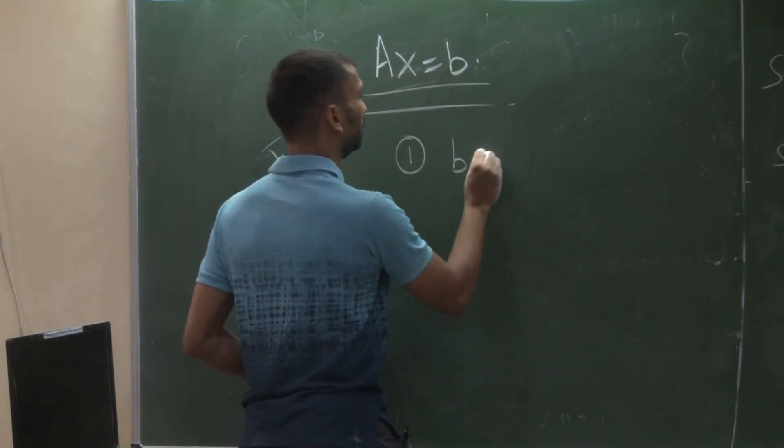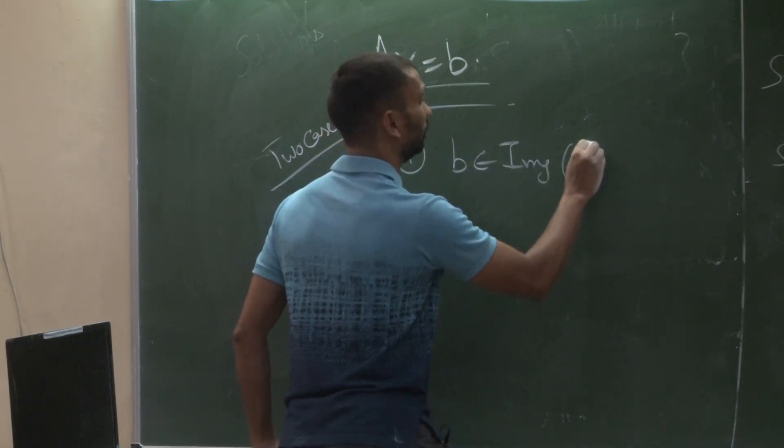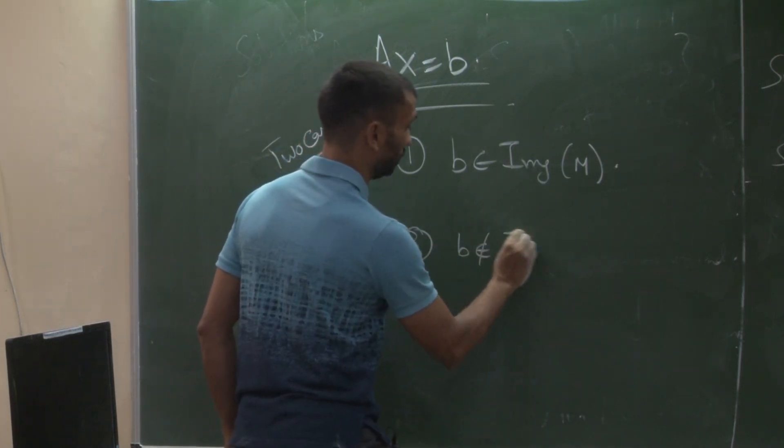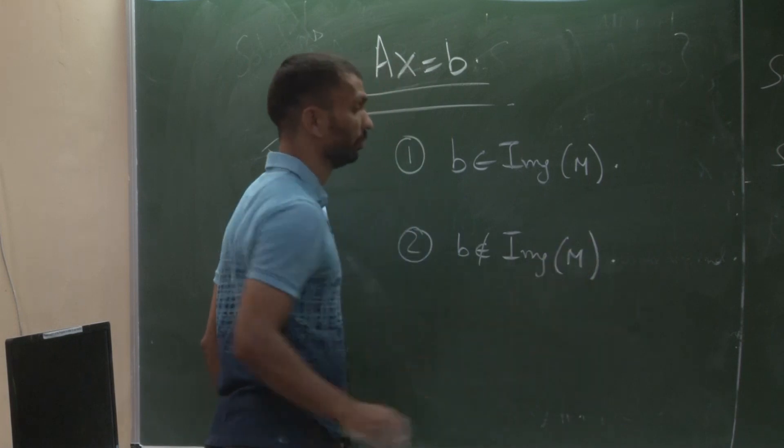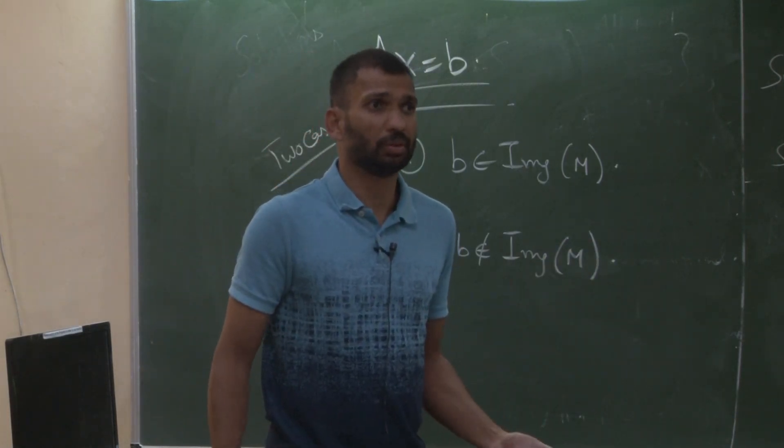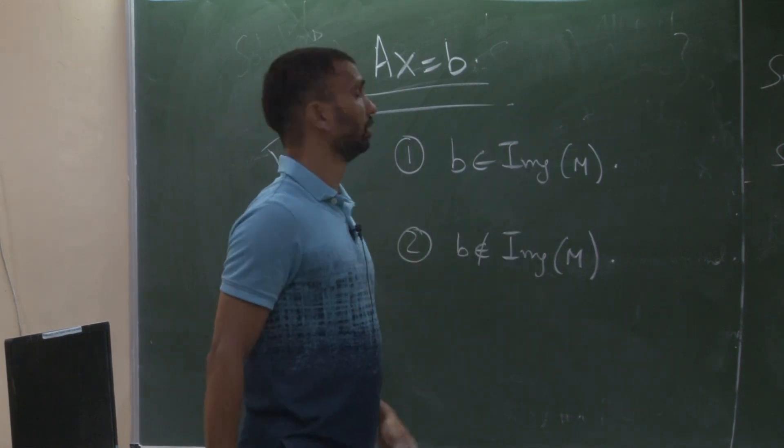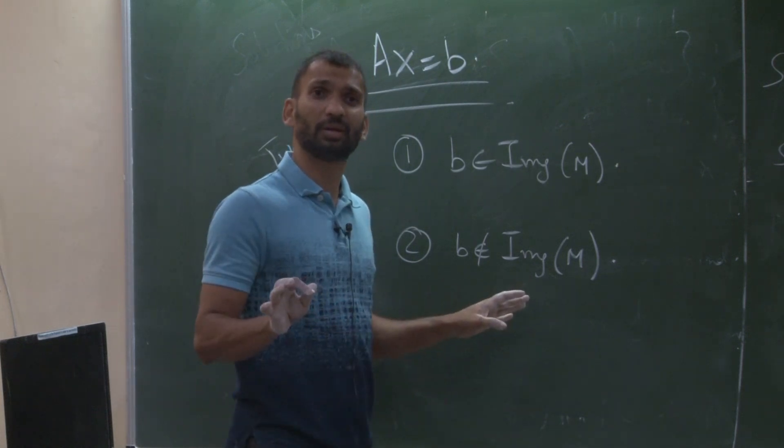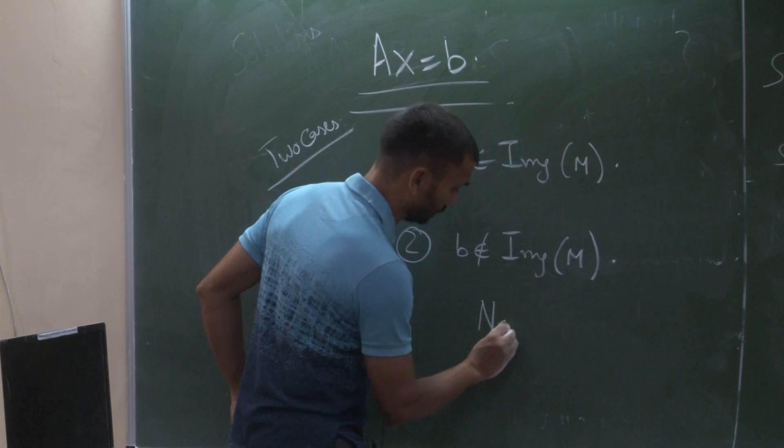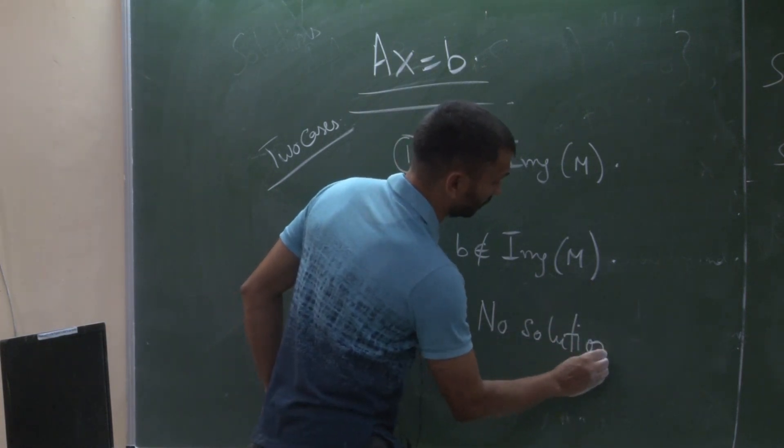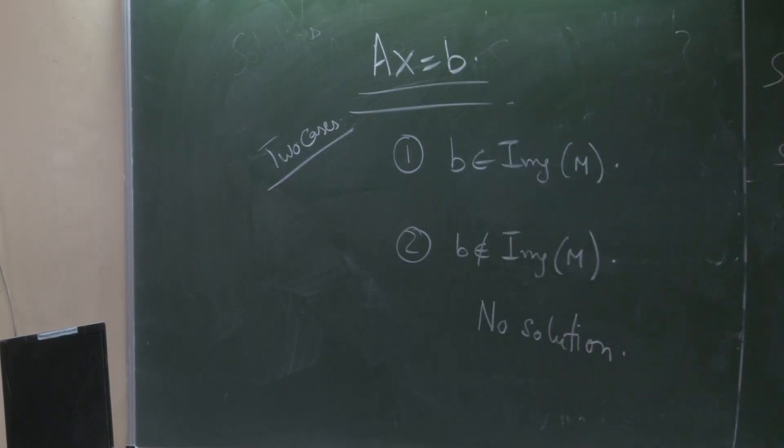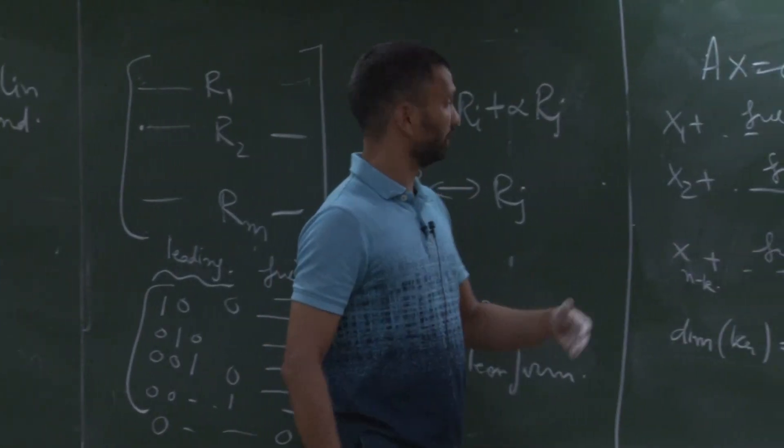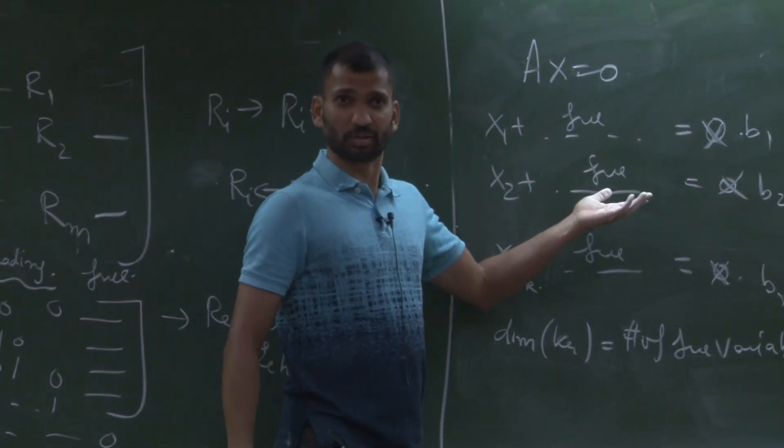Two cases, one is, right, simple. This partitions everything. So if b is not an element of image of M, then no solution. That basically means that there will be some kind of contradiction, right.